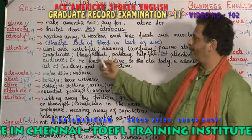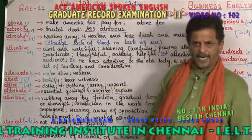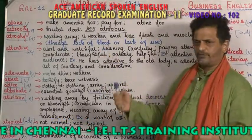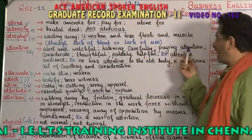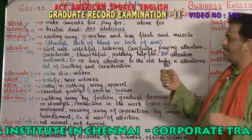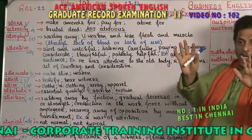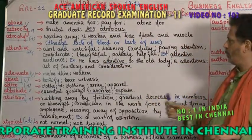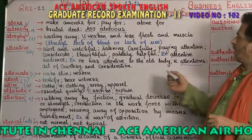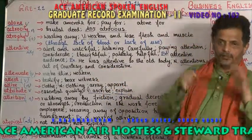'Attentive' — the ending '-ive' tells you it is an adjective. Attentive means being very alert, very watchful, listening carefully, paying attention, considerate, and thoughtful. Example: an attentive audience — the audience is listening very well. He was attentive to the old lady — acts of courtesy and consideration.